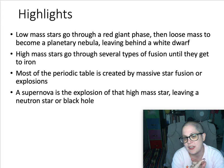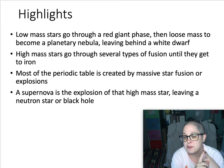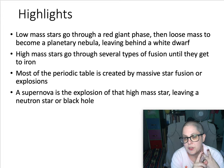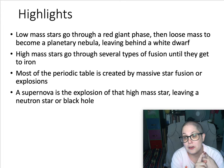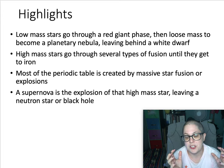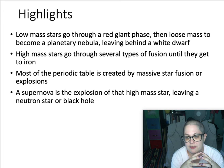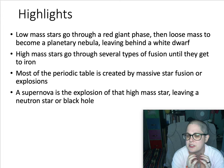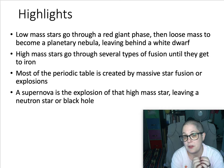For a recap: low mass stars go through a red giant phase, lose mass as a planetary nebula, and leave behind a white dwarf. High mass stars go through several types of fusion until they get to iron, and then they go supernova — the explosion of a high mass star. Most elements on the periodic table are created through massive star fusion, explosions, or intermediate mass star fusion. A supernova is that super bright explosion that can be seen way outside a galaxy, leaving behind a weird little neutron star, or the even weirder thing we're going to talk about next time: a black hole.